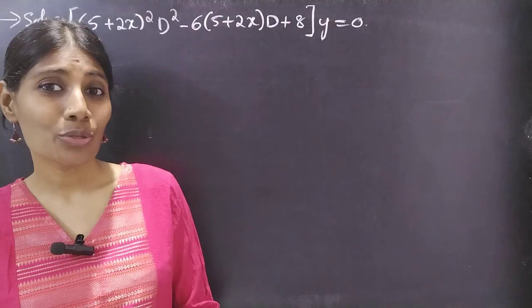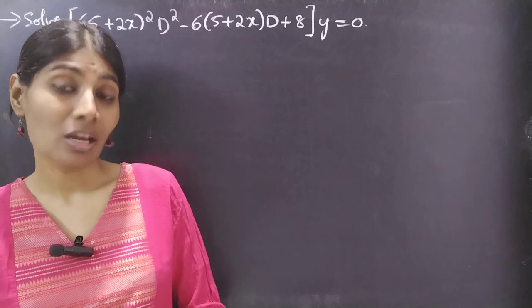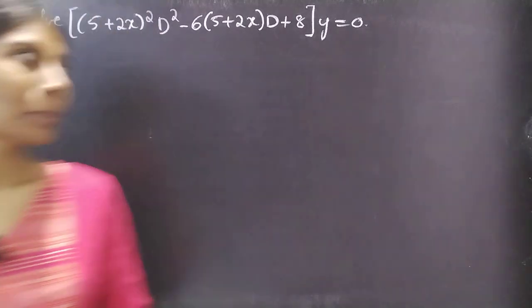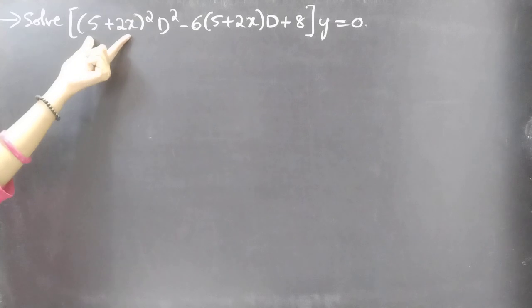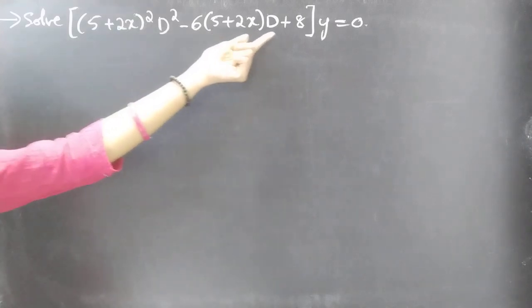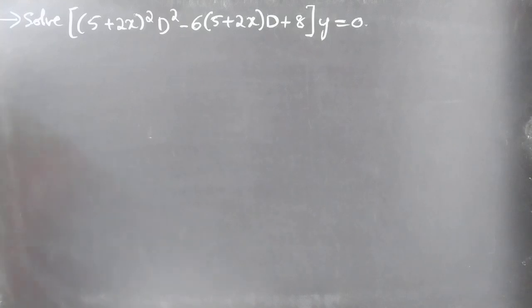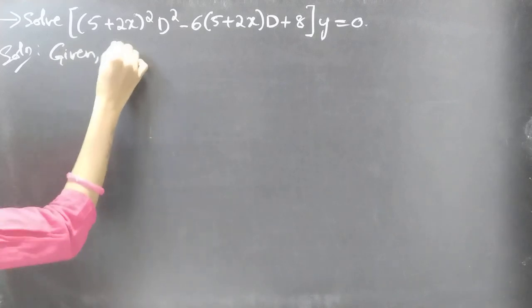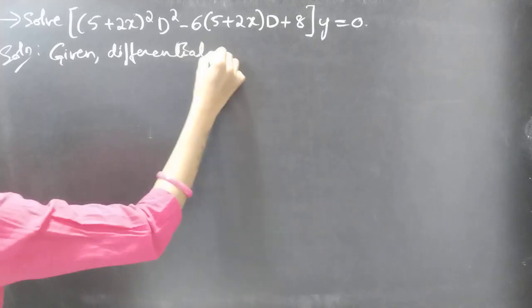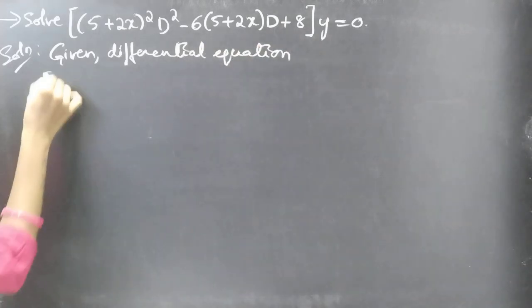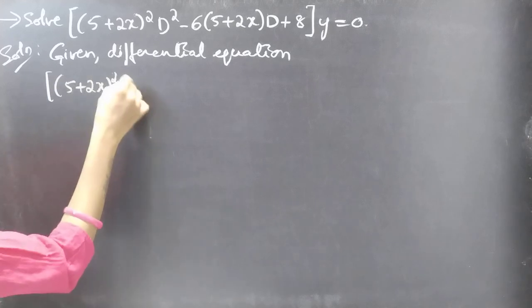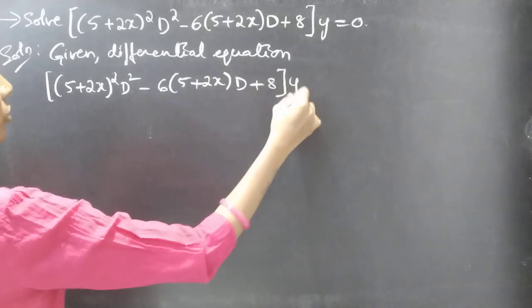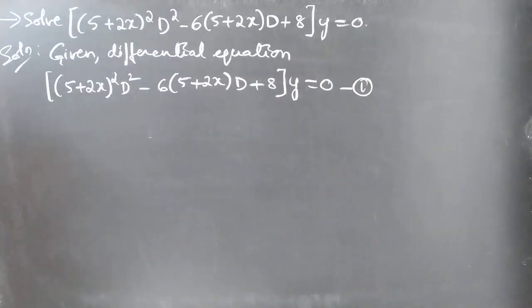Hello everyone, this is Kalpana. In this video we are going to solve a problem from Legendre's equation — specifically a Legendre's equation whose RHS is zero. The given differential equation is: (5 + 2x)² · D² minus 6(5 + 2x) · D plus 8, into y, equal to 0. Consider this as equation number 1.